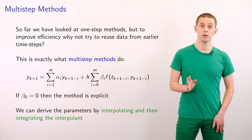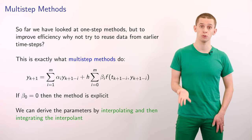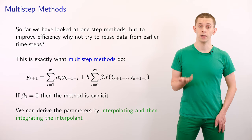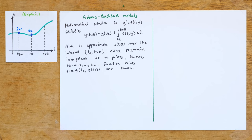If beta_0 is equal to 0 then we have an explicit method. If beta_0 is non-zero then we would have an implicit dependence on y_{k+1} on the right-hand side. So now we're going to look at how we can derive the parameters in methods like this — the alphas and betas — and we can do this using a general framework by interpolating and then integrating the interpolant.